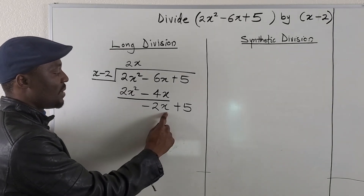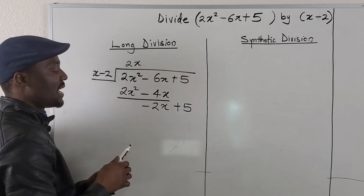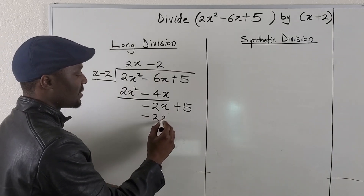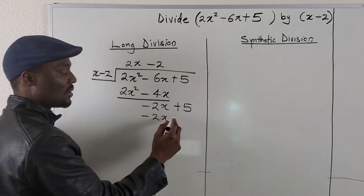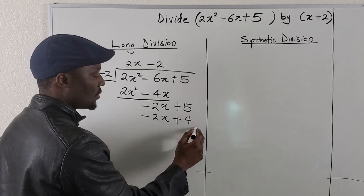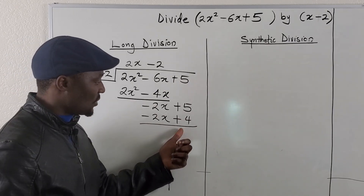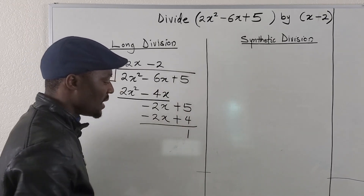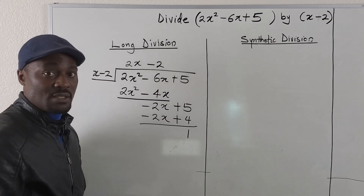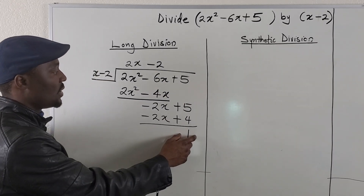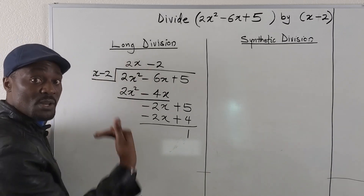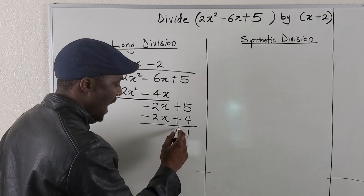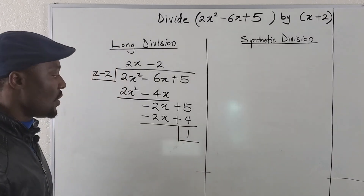You do the same thing. If I divide negative 2x by x, what will I get? I'll get negative 2. Negative 2 times x is negative 2x, and negative 2 times negative 2 is going to be positive 4. You subtract again. 5 minus 4 gives you 1. At this point, you can't continue because you no longer have a linear polynomial — you've gone below it. So you have a remainder.